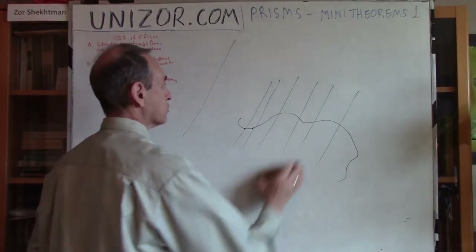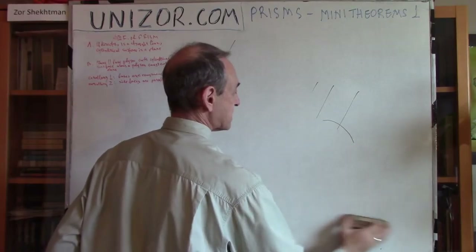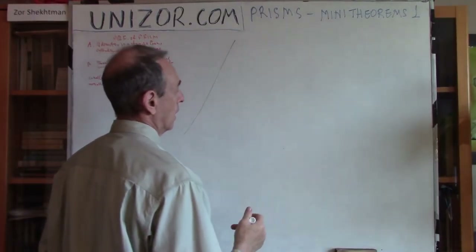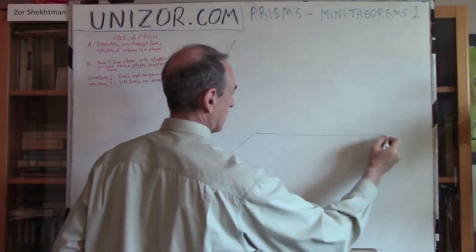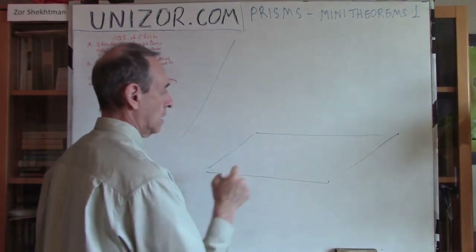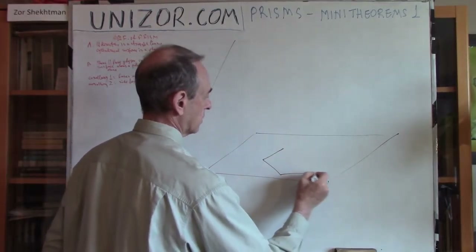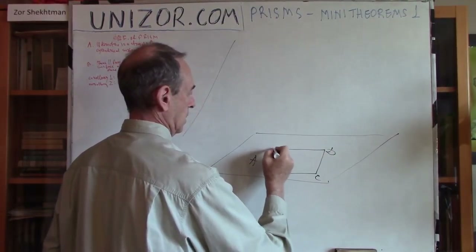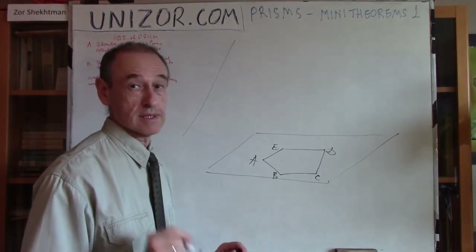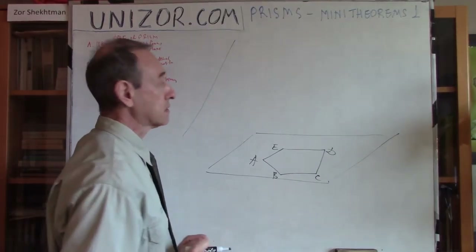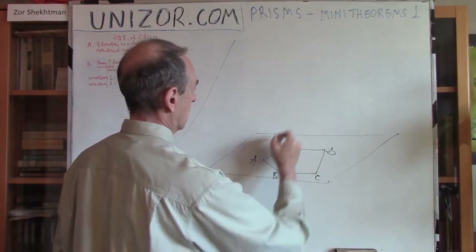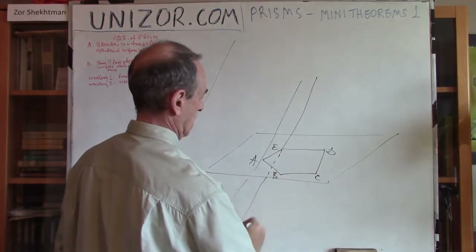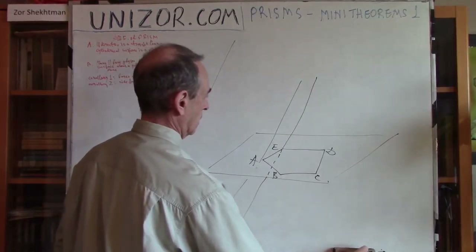When we want to talk about prisms, we are talking about a specific directrice. As a directrice, we are using not just any curve — first of all we have to have a plane, and on this plane we have to have some kind of a polygon. This polygon is supposed to be used as a directrice. Now let's do the cylindrical surface construction — from each point I draw a line parallel to the generatrix.